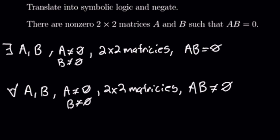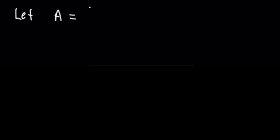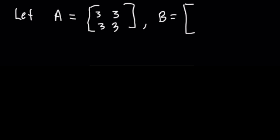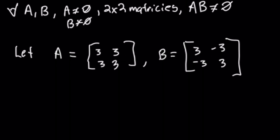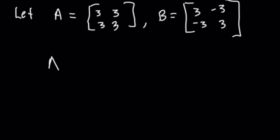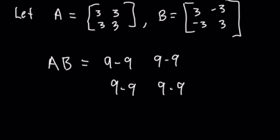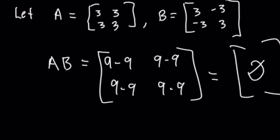Just for fun, let's do an example of two by two matrices that are non-zero and when multiplied equal zero. We'll let A be a two by two matrix of all threes, and B be a two by two matrix with threes on the main diagonal and negative threes on the off diagonal. When we multiply these, each entry gives us nine minus nine, which gives us the zero matrix. Okay great, that's all I'm going to do for this problem, and that's a good place to stop.